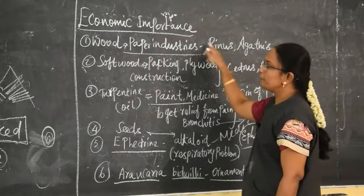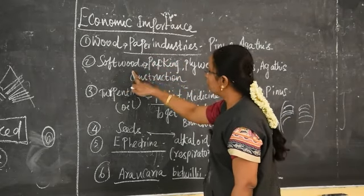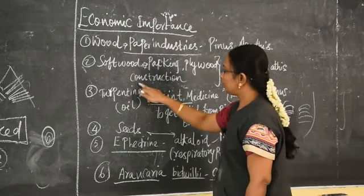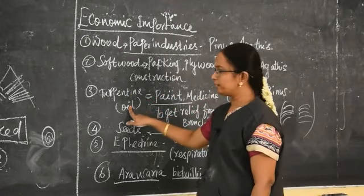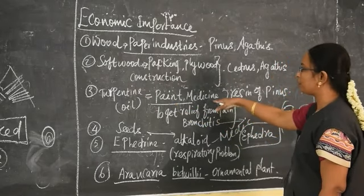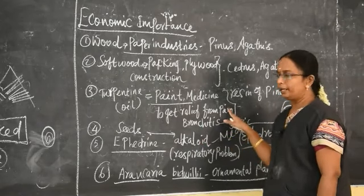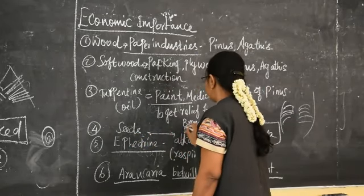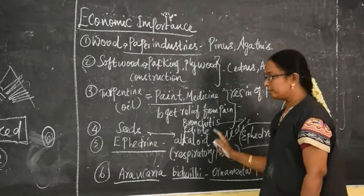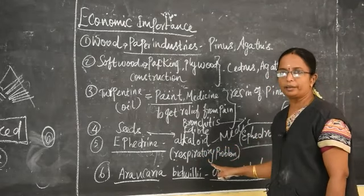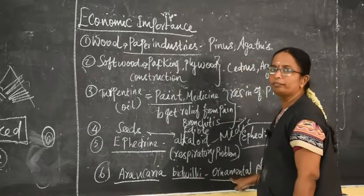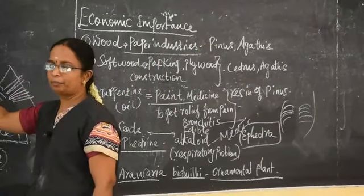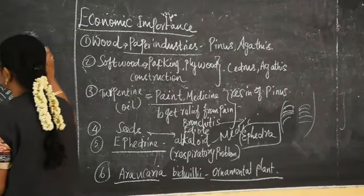To recap the economic importance: wood from Pinus is used for paper industry; soft wood from Cedrus and Agathis is used for plywood construction, packing, and construction purposes. Turpentine oil extracted from Pinus resins is used in paint, and medicine from turpentine is used to cure pain and bronchitis. Some seeds are edible. Ephedrine from Ephedra is used to cure respiratory problems. Araucaria bidwillii is an ornamental plant. So, Gymnosperms are naked seeded plants with vascular tissue present.